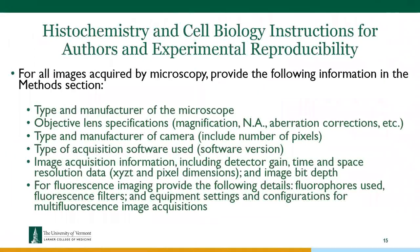In my role as editor, I rewrote the methods section for our journal focused on imaging, because imaging experiments are often difficult to reproduce. Now if somebody submits a manuscript where they did microscopy, they need to list the type and manufacturer of the microscope, objective lens specifications, type and manufacturer of camera, acquisition software, all acquisition information, and for fluorescence, all relevant settings. These are things that typically don't show up in papers, but we decided they are important for reproducibility.